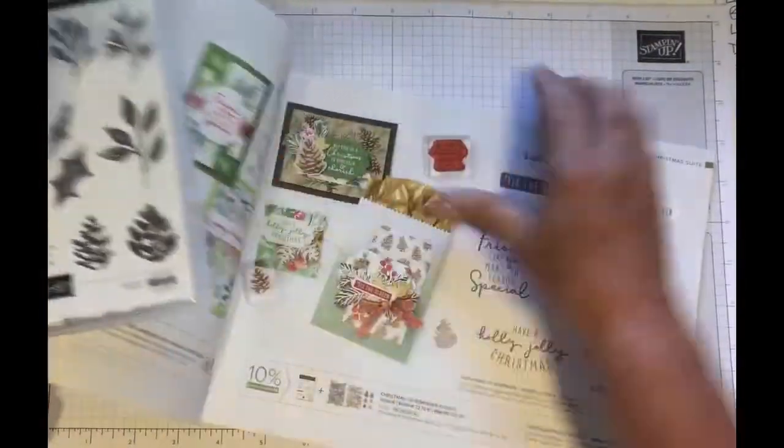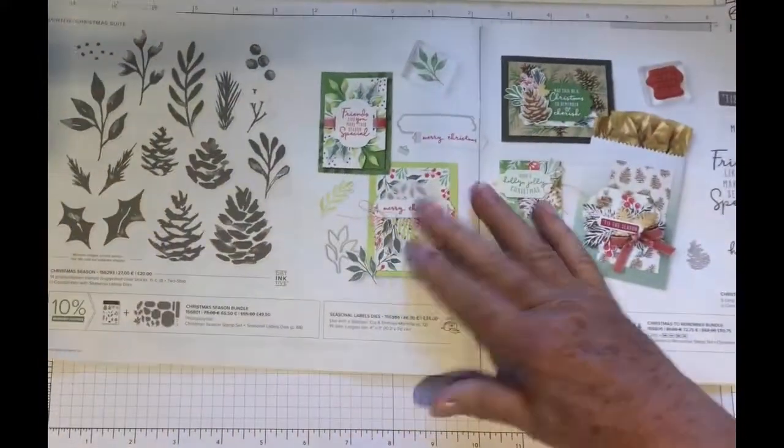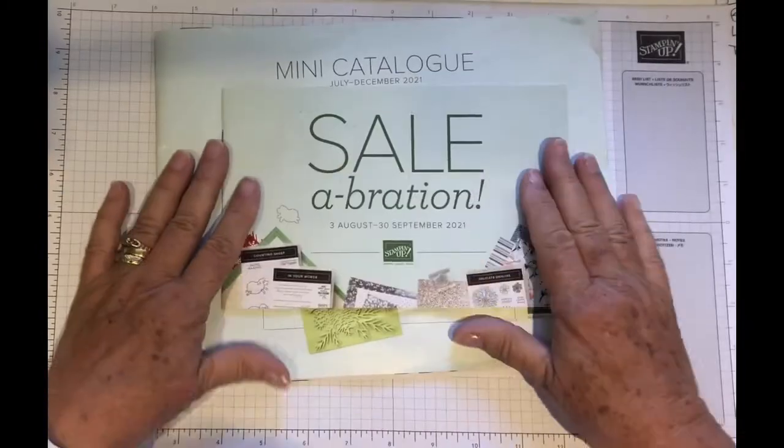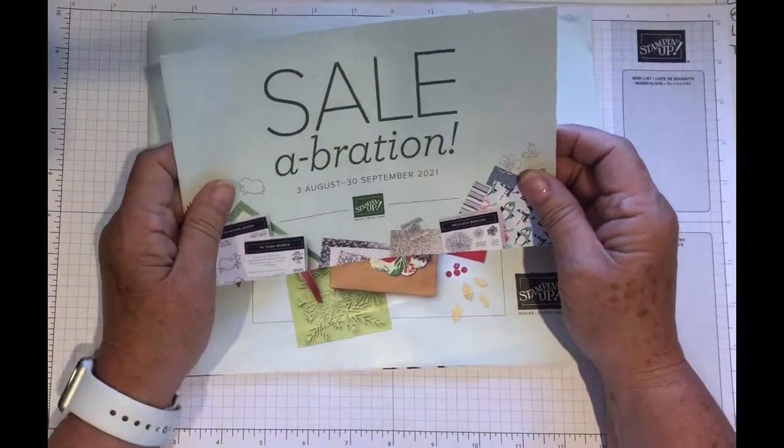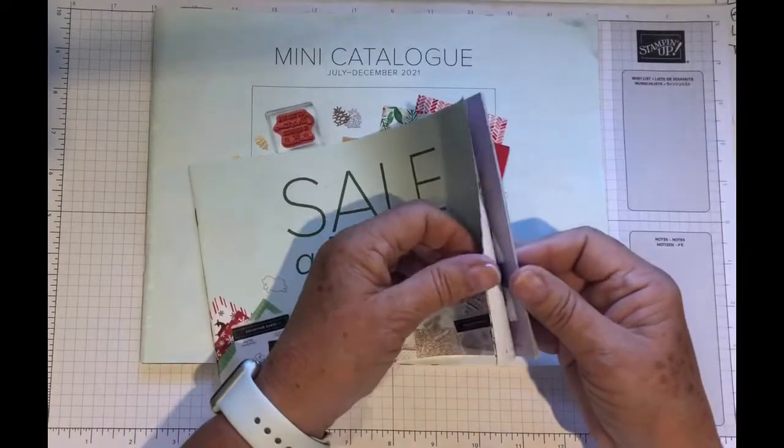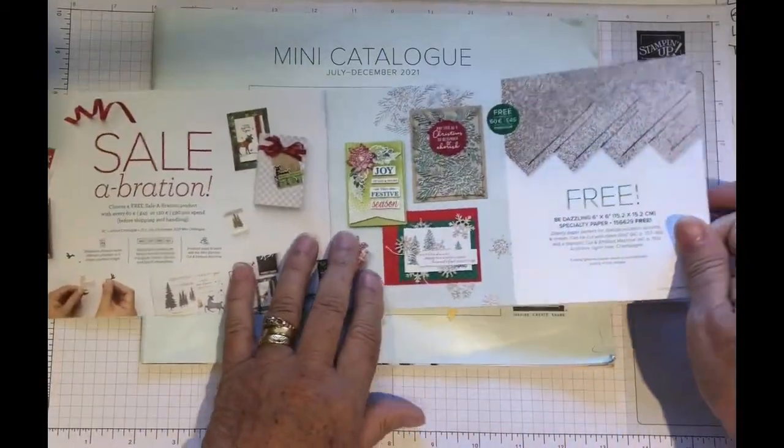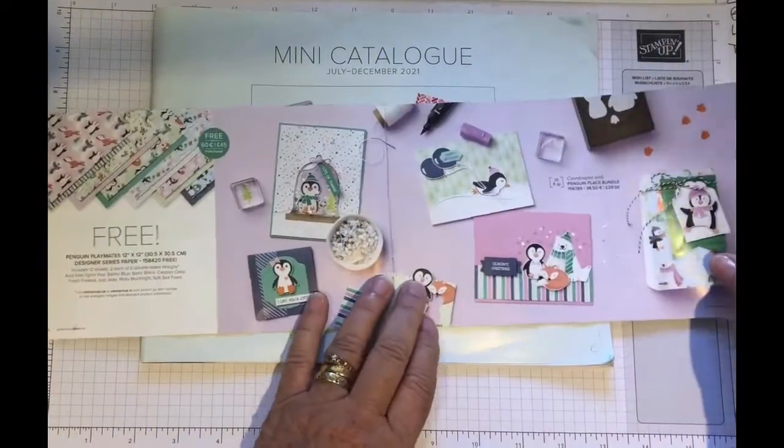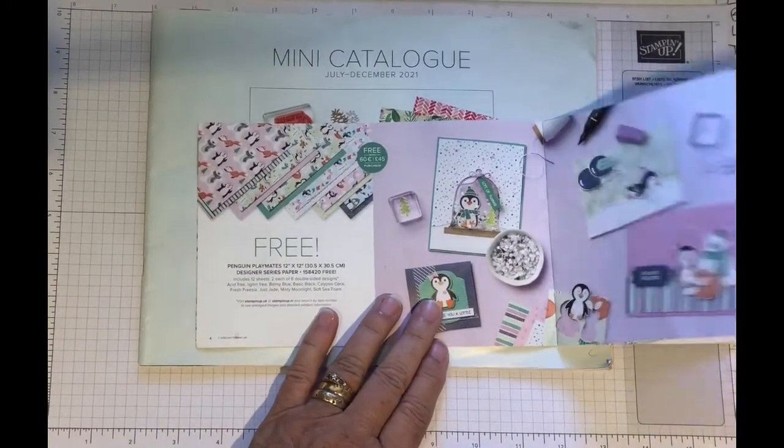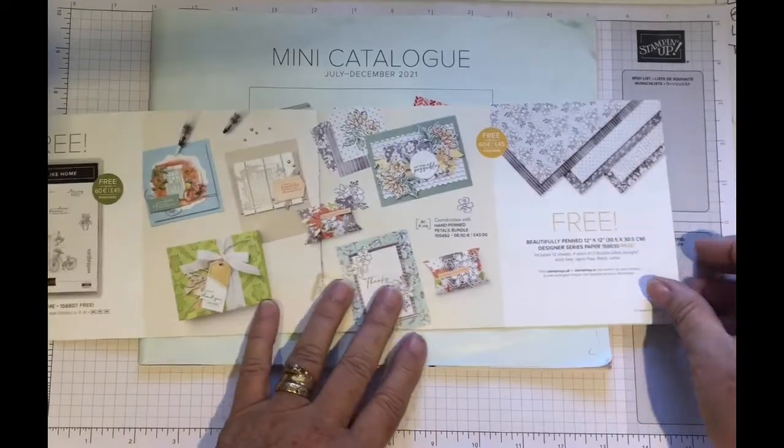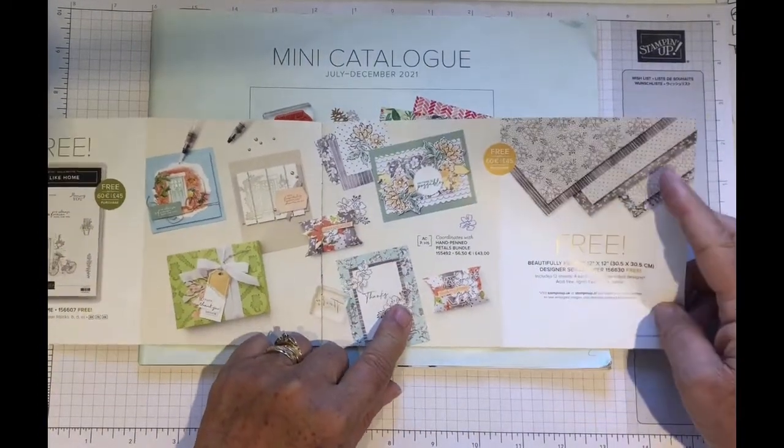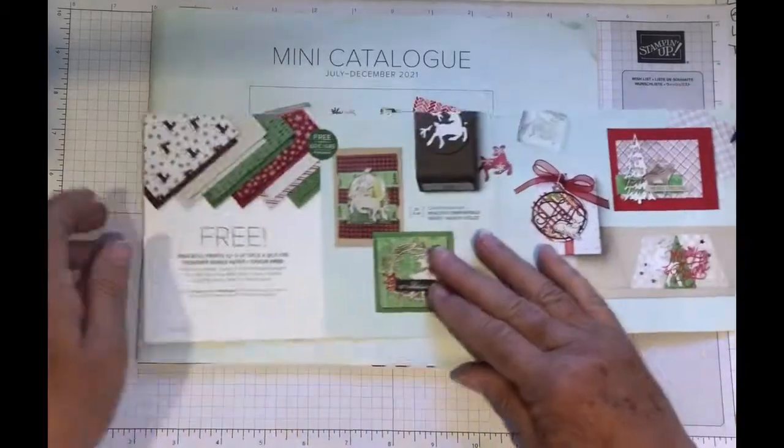So take a look through the catalogue and you can now order if you wish to. So we'll just pop this to one side and we'll have a quick look at the Celebration. For every £45 you spend in the annual or the mini catalogue, you can choose one of these free out of the Celebration. There's some beautiful papers and stamps.